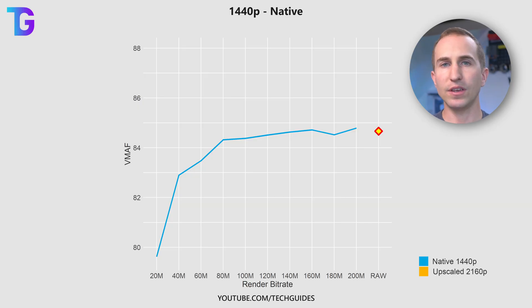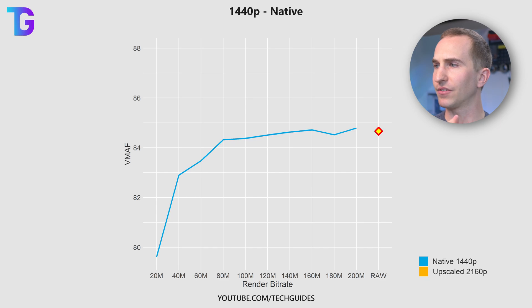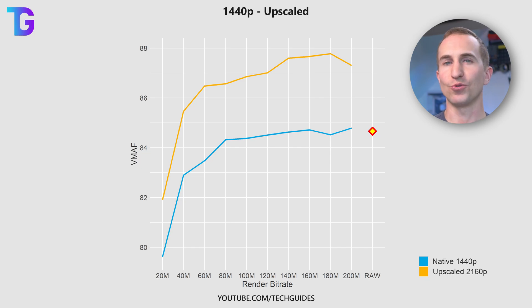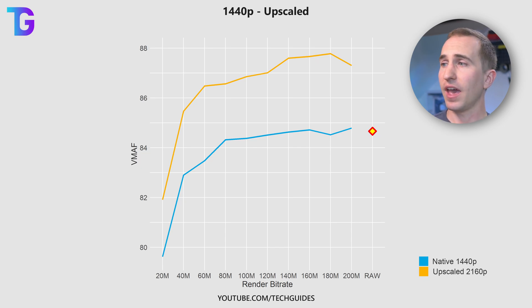Here you can see the improvement in visual quality when increasing the render bitrate for a native 1440p video. As you can see from the blue line, this plateaus at around 18 megabits per second, where it's almost indistinguishable from the raw video — which I recorded at the lossless setting in OBS, resulting in an overall bitrate of 815 megabits per second. I also show what the visual quality of a 4K upscaled video looks like when downloading the 1440p version, shown in orange, and as you can see it completely blows the blue one out of the water. It's very beneficial to upscale even 1440p base footage to 4K to get higher quality on YouTube.